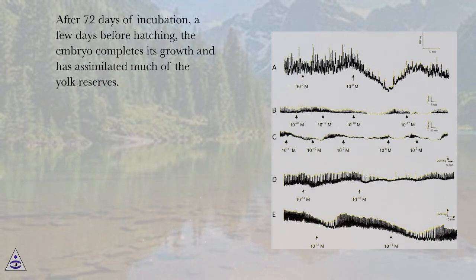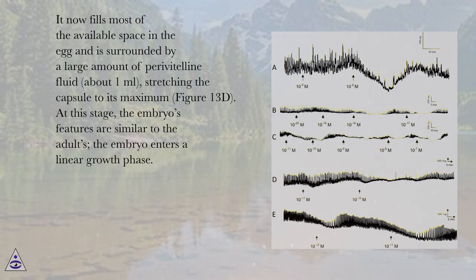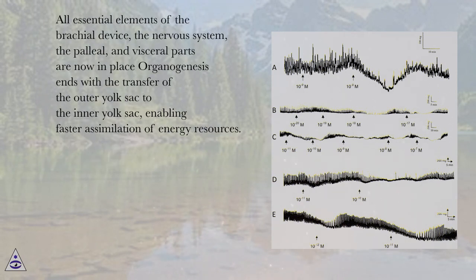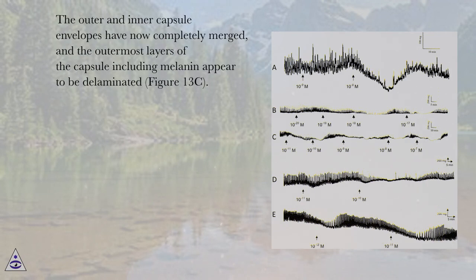After 72 days of incubation, a few days before hatching, the embryo completes its growth and has assimilated much of the yolk reserves. It now fills most of the available space in the egg and is surrounded by a large amount of perivitelline fluid, about 1 milliliter, stretching the capsule to its maximum, figure 13D. At this stage, the embryo's features are similar to the adult's, and the embryo enters a linear growth phase. All essential elements of the brachial device, the nervous system, the paleo- and visceral parts are now in place. Organogenesis ends with the transfer of the outer yolk sac to the inner yolk sac, enabling faster assimilation of energy resources. The outer and inner capsule envelopes have now completely merged, and the outermost layers including melanin appear to be delaminated, figure 13C.